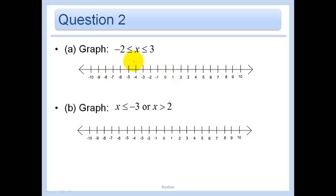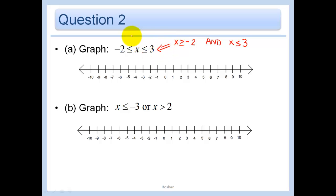This is one of those compound inequalities, basically saying that X is greater than or equal to negative two AND X is less than or equal to three. They're equivalent. This is easier to say: X is between negative two and three, inclusive, because we have the less than or equal to signs. You see how that's an example of 'and' because it is greater than or equal to negative two and less than or equal to three.